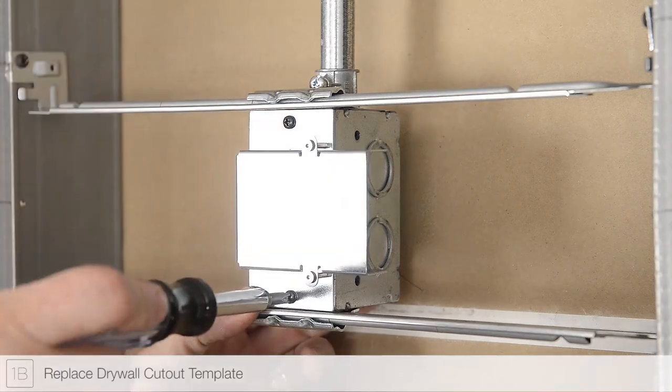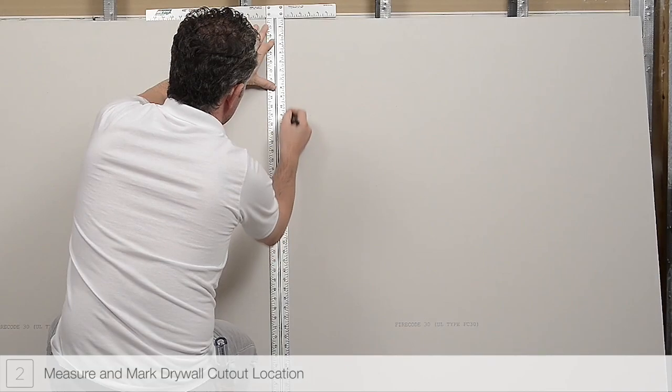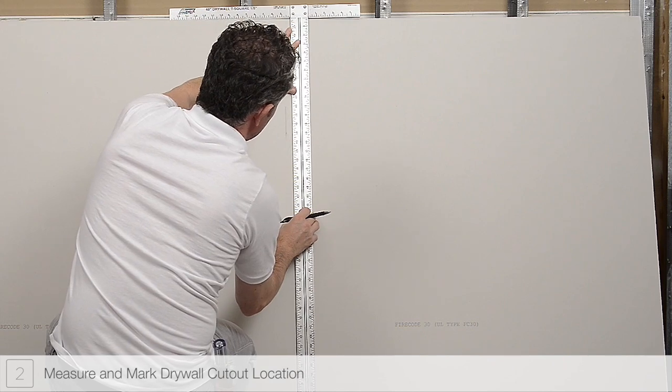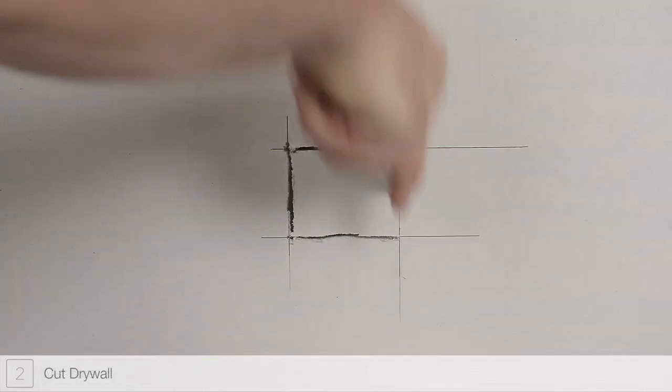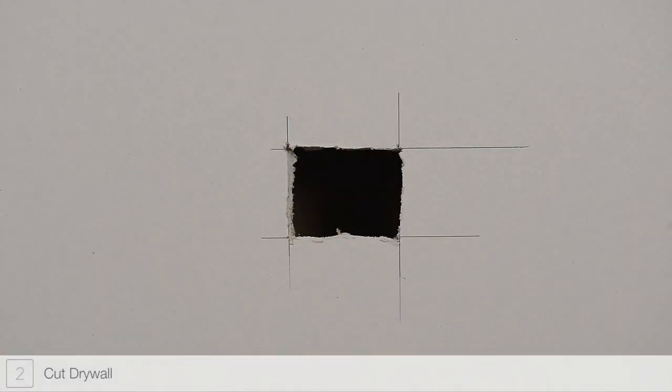Replace the drywall cutout template. Step 2B: Locate and mark the position of the power feed junction box. Cut the drywall using a jab saw or other appropriate tool to expose the junction box.